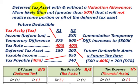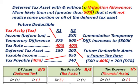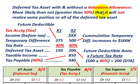What we're going to be looking at here is a deferred tax asset with and without a valuation allowance account. We would set up this valuation allowance account for a deferred tax asset when it's more likely than not — greater than a 50% chance — that you will not be able to realize some portion or all of this deferred tax asset.